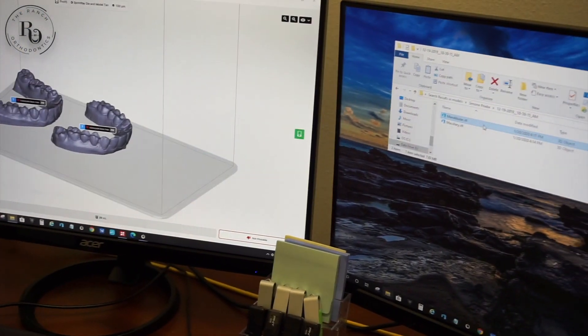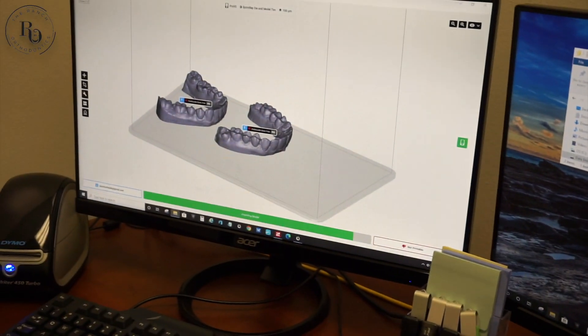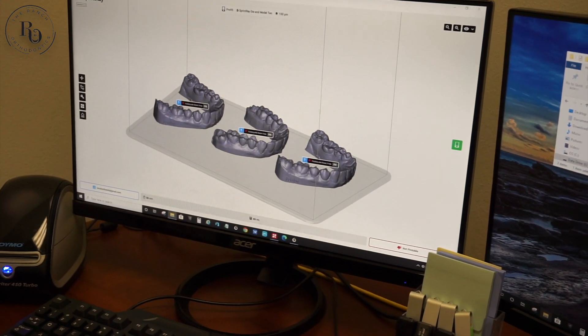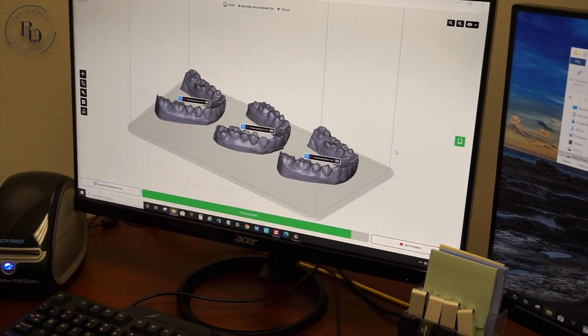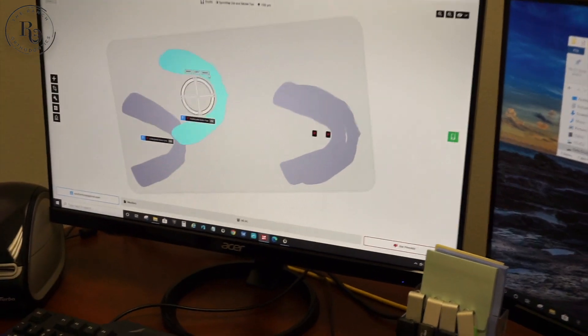Every single aligner that you wear has a model that goes with it. Each aligner is about two degrees of movement and there is a 3D printed model for each one of those aligners.